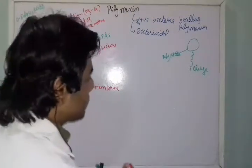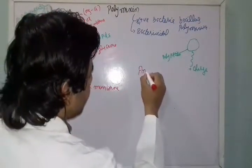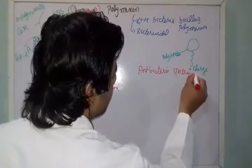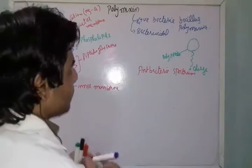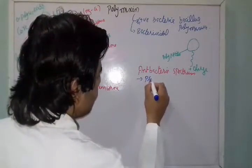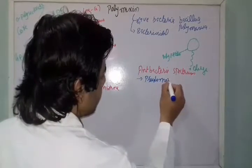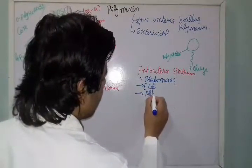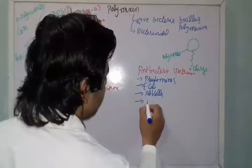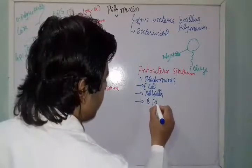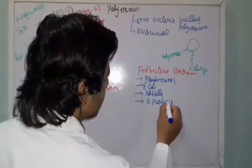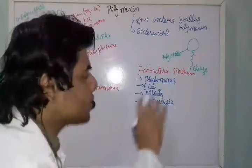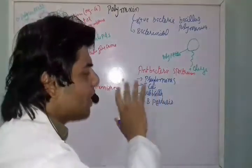Now let's talk about the antibacterial spectrum. Polymyxin is active against Pseudomonas, E. coli, Klebsiella, and Bordetella pertussis. There are some other bacteria as well, but these are the common bacteria that are susceptible to these drugs.